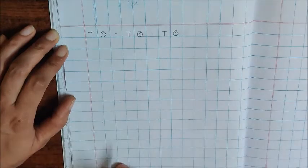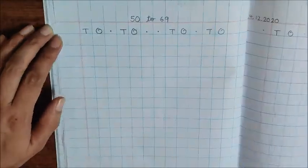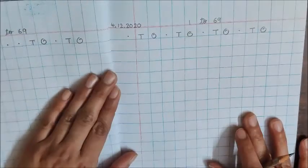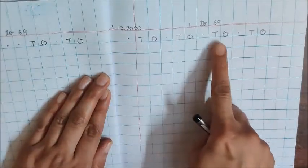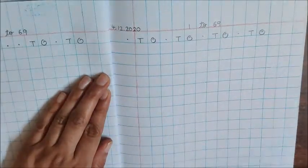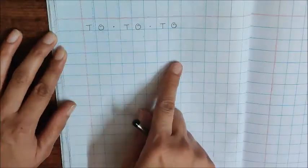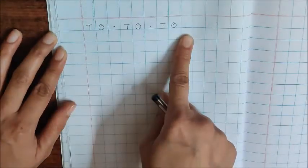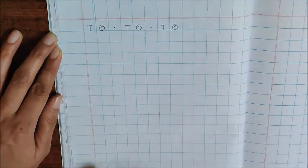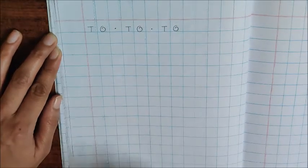So, look carefully. On the first page, we have written four TOs. 1, 2, 3, 4. And then, turn the page. And on this page, we have three TOs. Now, time to write numbers 1 to 69.